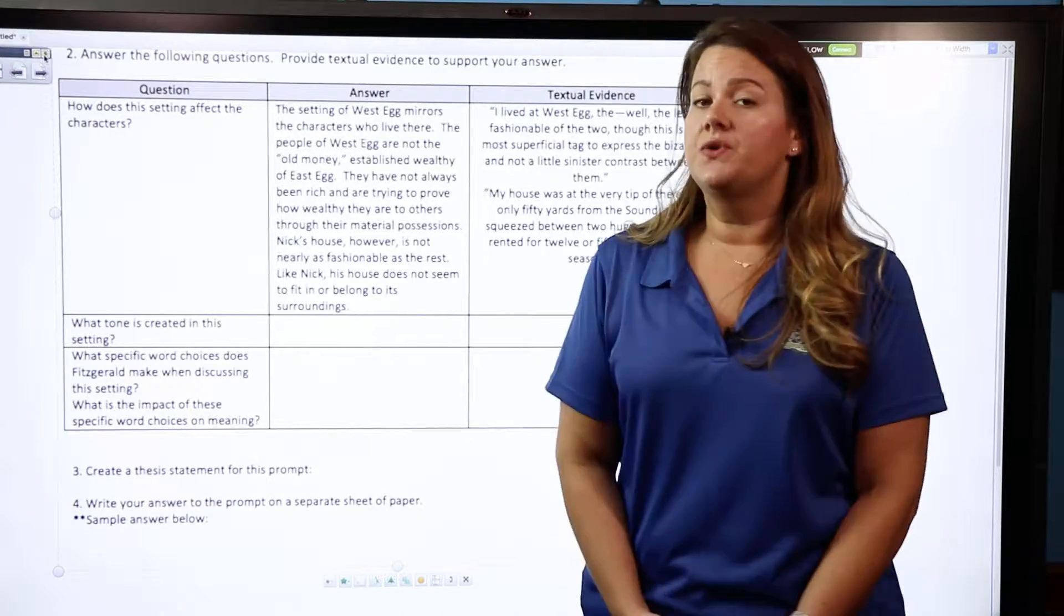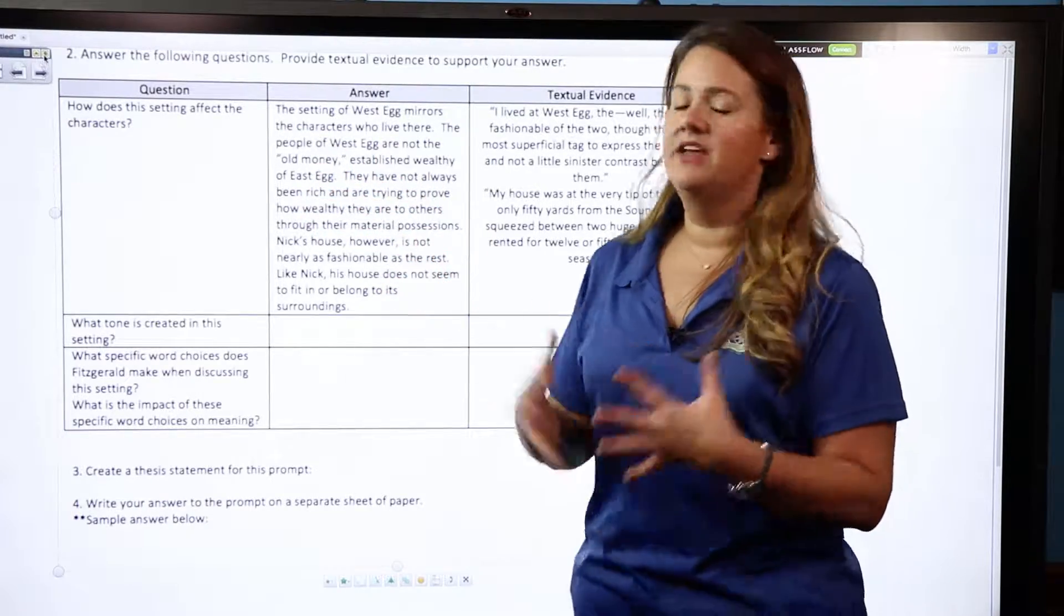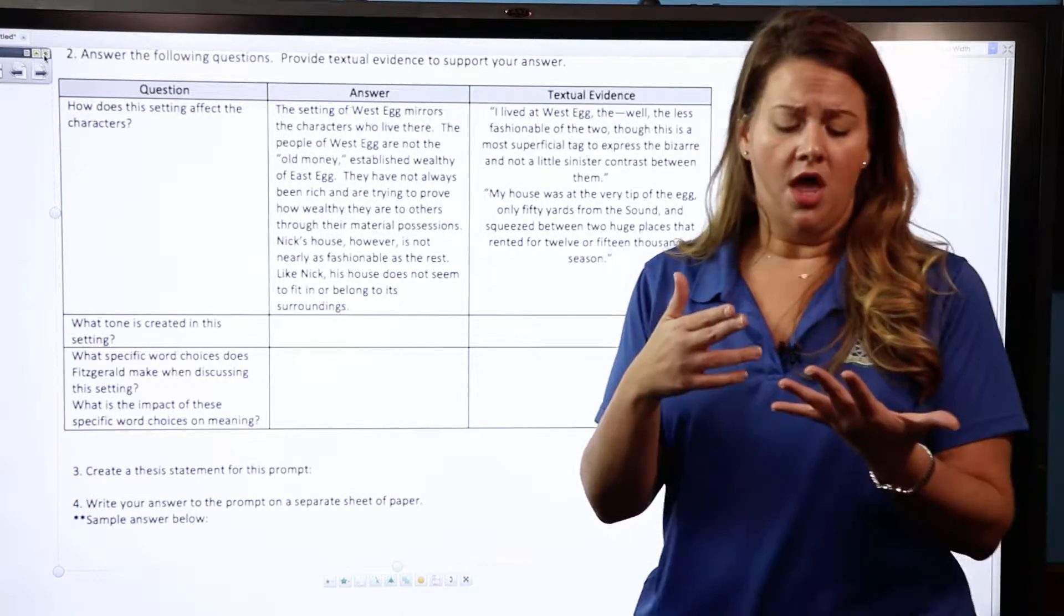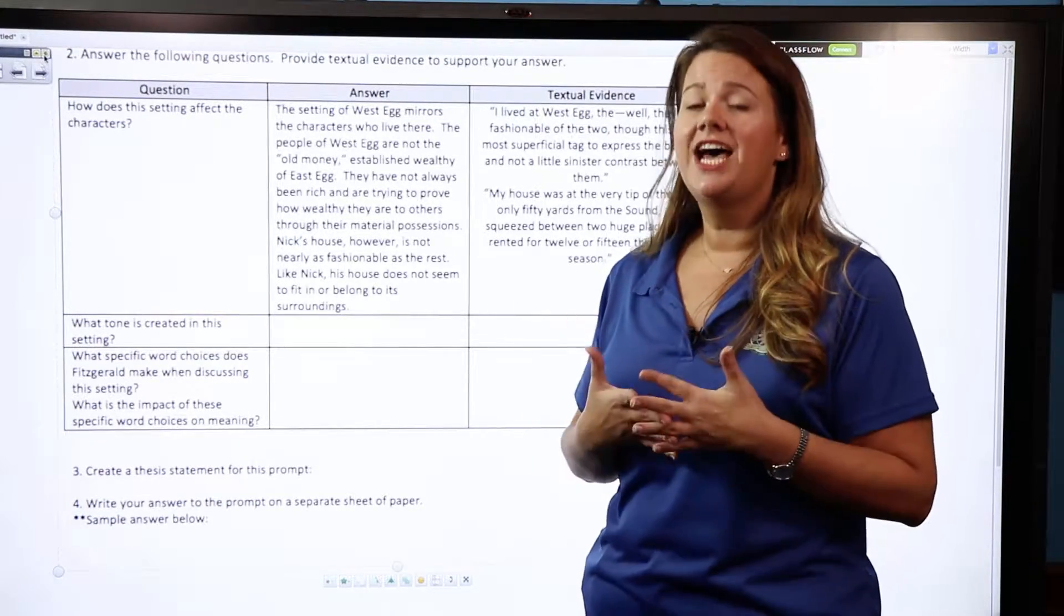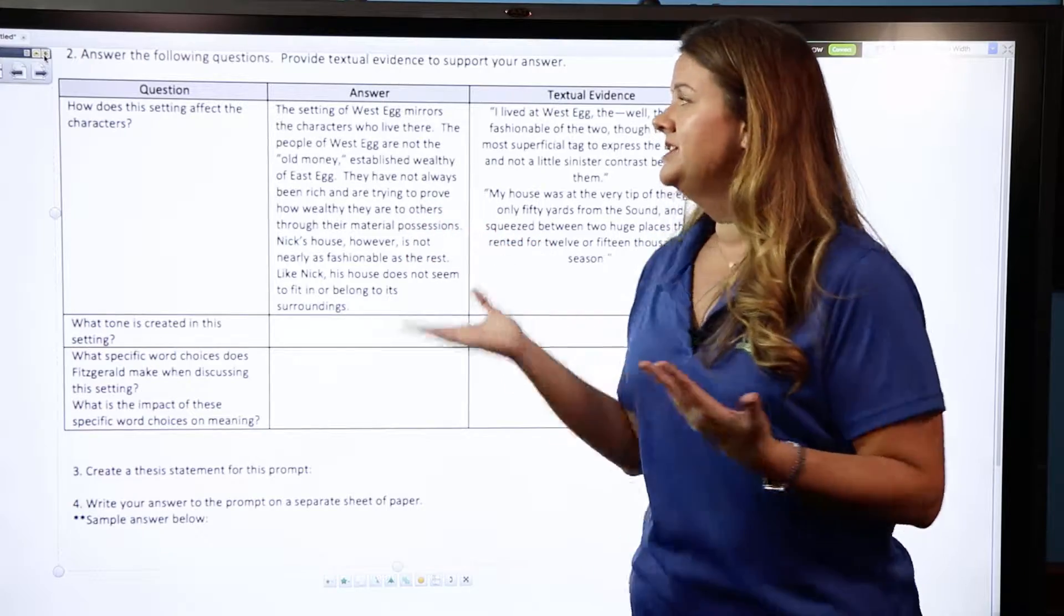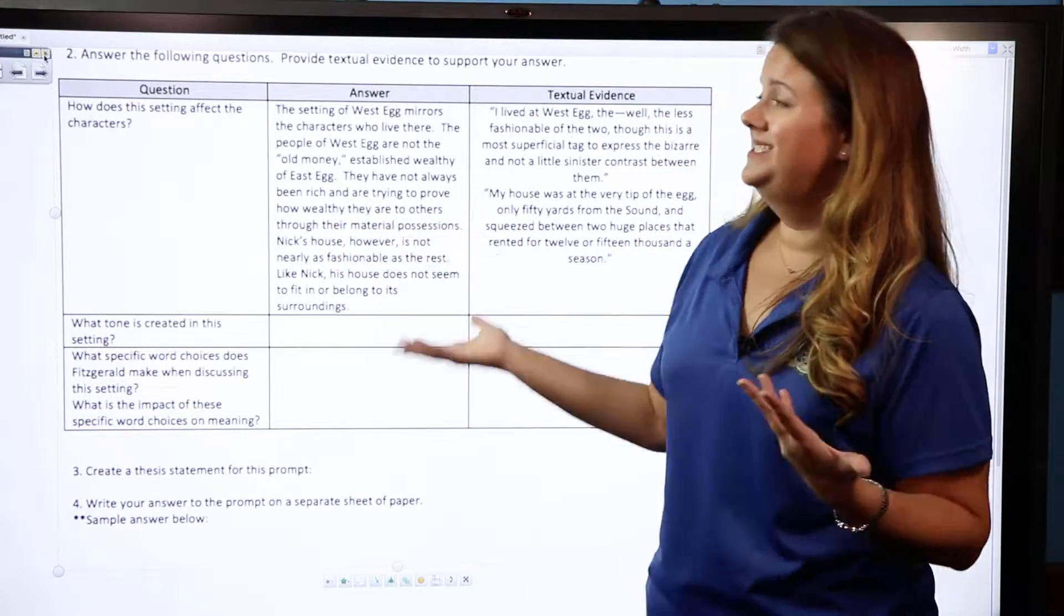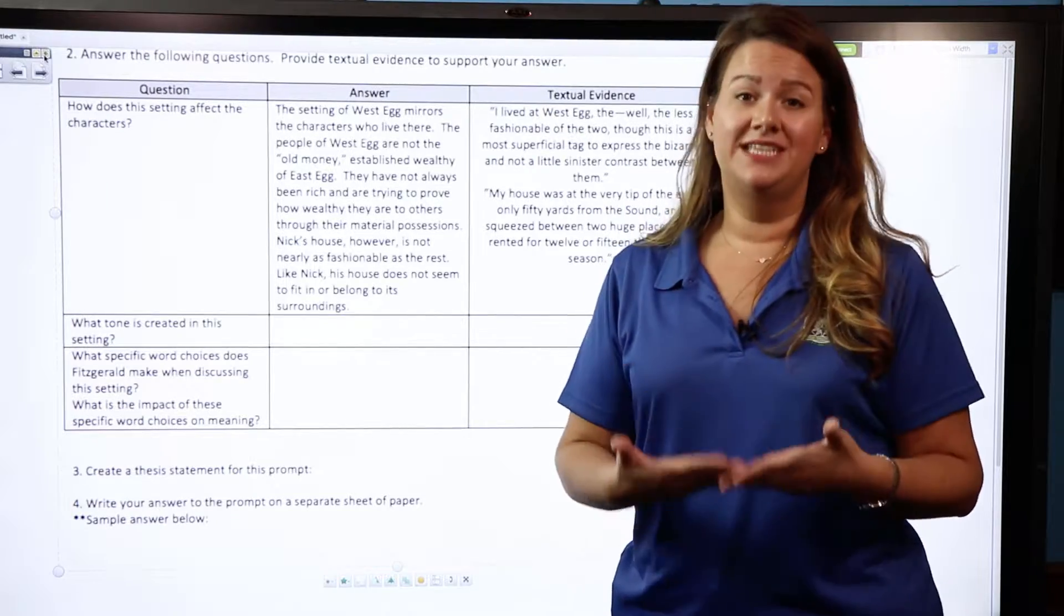Nick's house, however, is not nearly as fashionable as the rest, as we learned very early on in chapter one. Like Nick, his house does not seem to fit in or belong to its surroundings. So that is my response to how does the setting affect the character. If you choose to write on East Egg or the Valley of Ashes, you're going to have an entirely different answer.